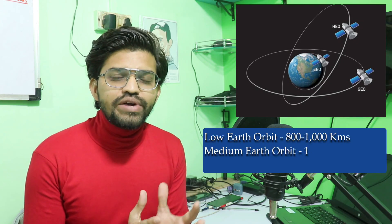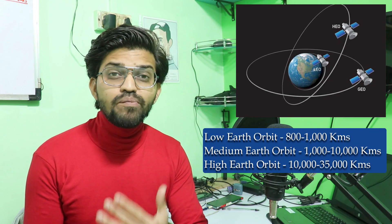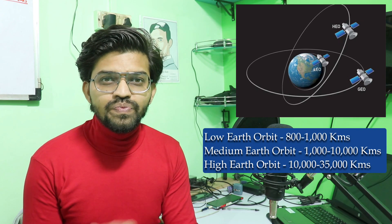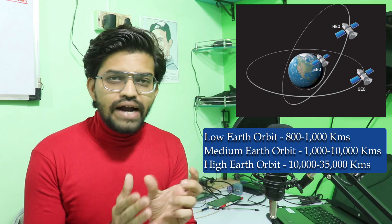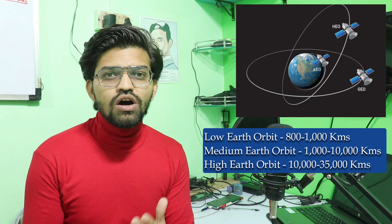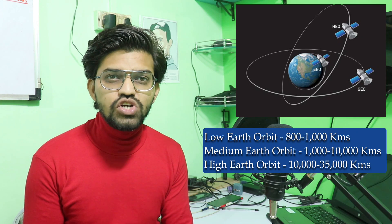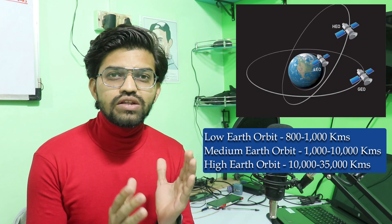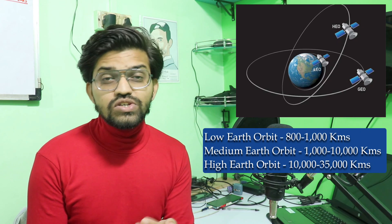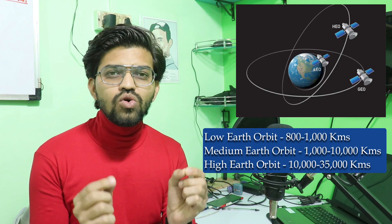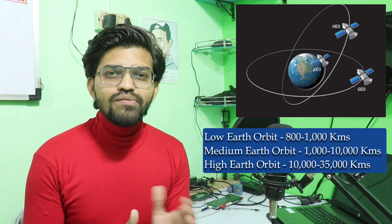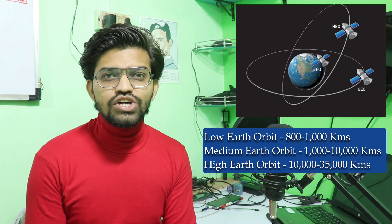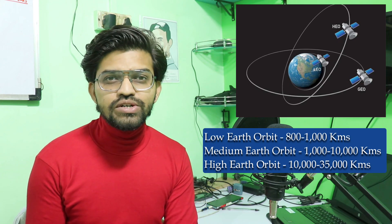Based on height, orbits can be classified as low earth orbit, medium earth orbit, and high earth orbit. The low earth orbit includes polar orbits with heights ranging from 800 to 1000 kilometers. Satellites in low earth orbit include earth observation satellites, some GPS navigation satellites, geographical information systems satellites, and weather satellites. For medium earth orbit, the height ranges from around 1000 to 10,000 kilometers.